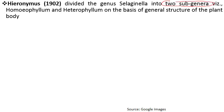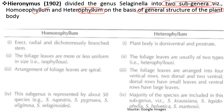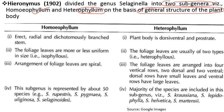Hieronymus in 1902 divided the genus Selaginella into two subgenera: Homeophyllum — homeo means same, phyllum means leaves — meaning they have similar leaves, also known as isophyllous; and Heterophyllum — hetero means different — having two different types of leaves.